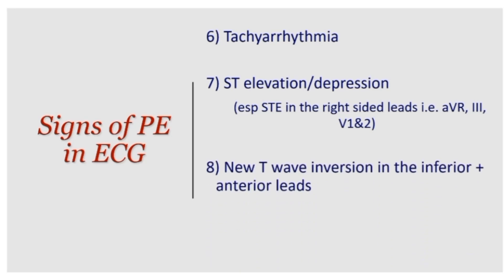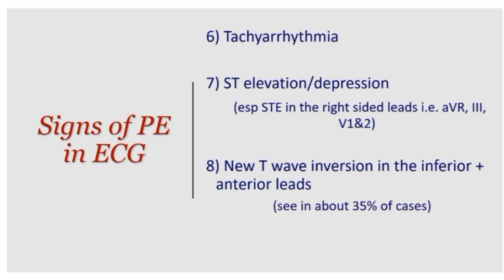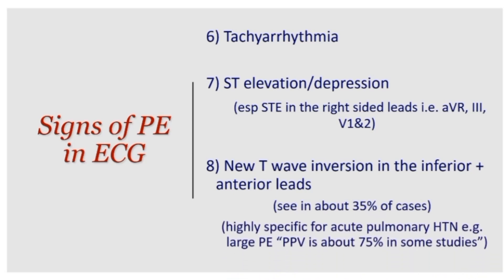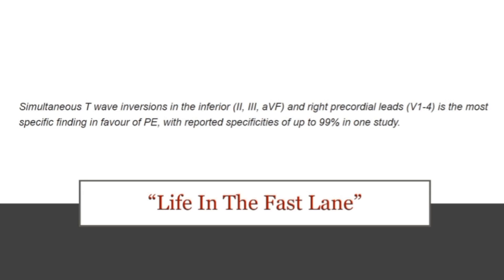The other finding I want to focus on this week is new T wave inversion in the inferior leads and anterior leads at the same time — simultaneous T wave inversion in both inferior and anterior leads. This is seen in about 35% of cases, and it is highly specific for acute pulmonary hypertension — which in emergency medicine language means PE.